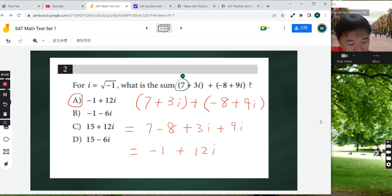So 7 minus 8. And then combine the other like terms, which is 3i, combining that with 9i. So 3i plus 9i.